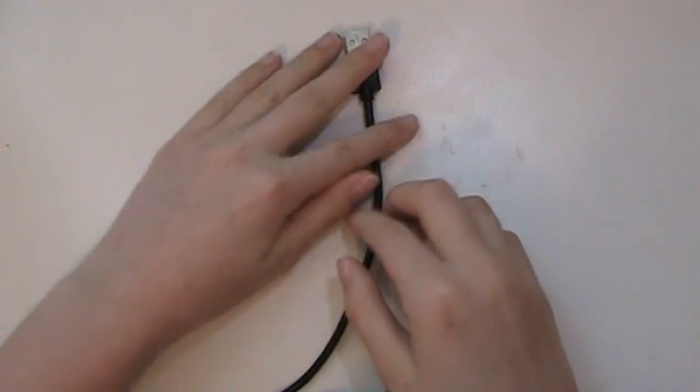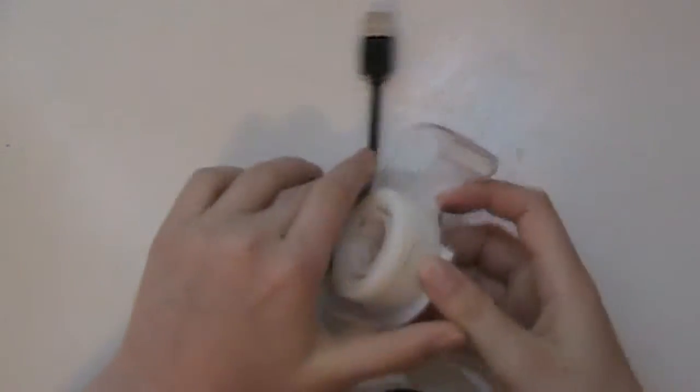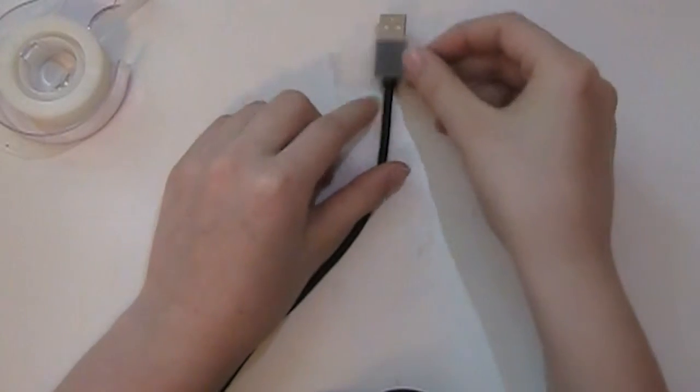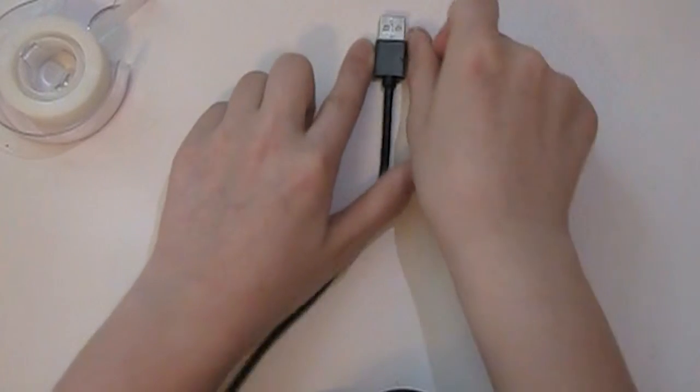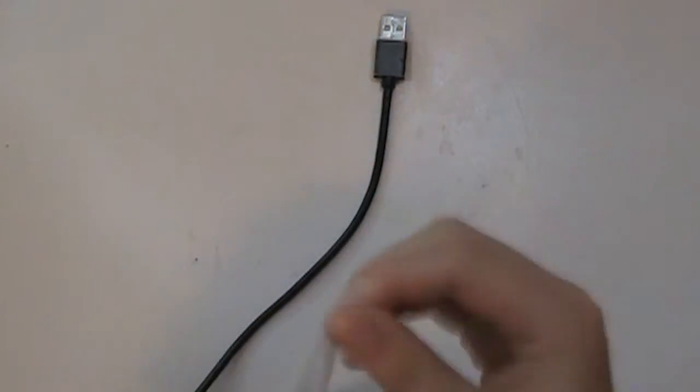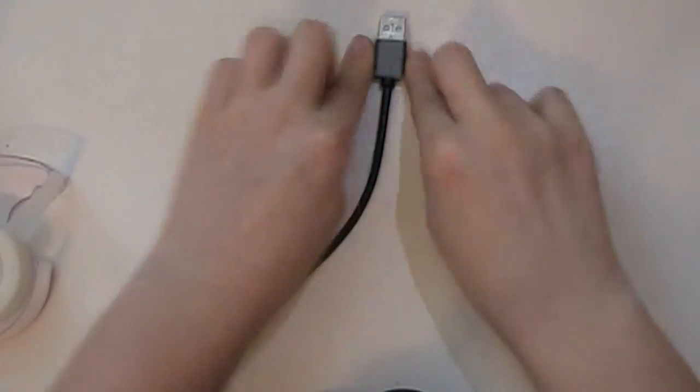To start off, take one end of your charging cord. I'm just going to use this end and tape it down to your surface. I think I need a longer piece of tape. Much better.